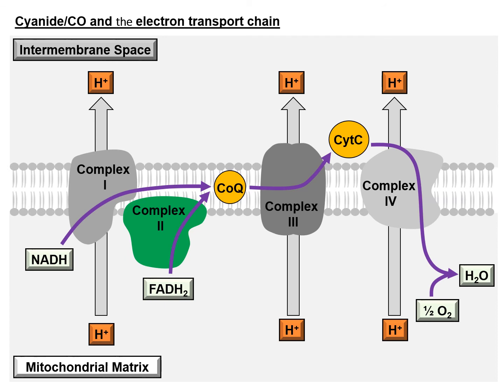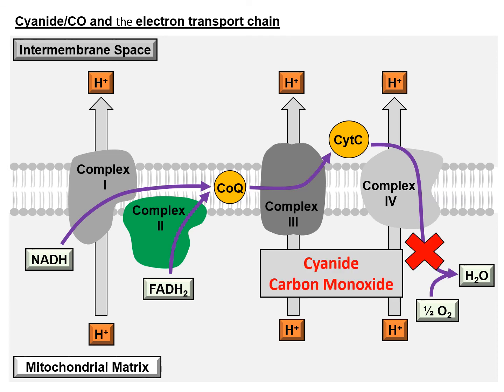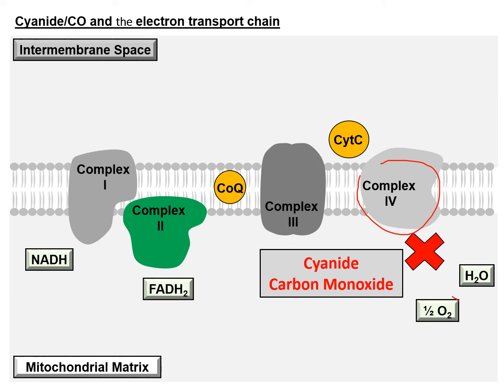When you have either cyanide or carbon monoxide in your electron transport chain, both compounds can block complex 4, so you will get no electron transport from complex 4 into the oxygen. With that, the whole electron transport series is being clogged, and as a consequence, there will be no ATP production subsequently.